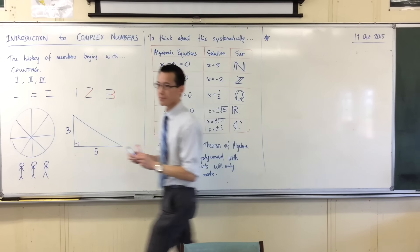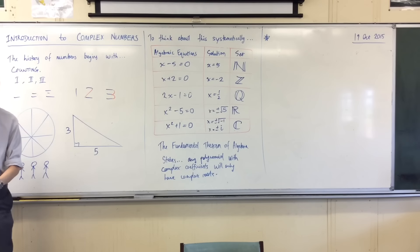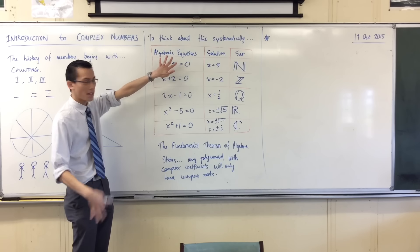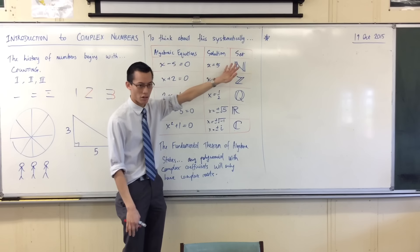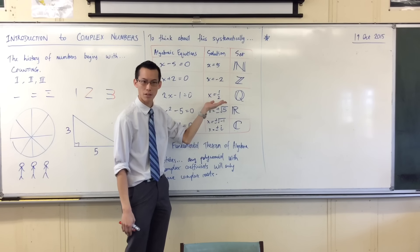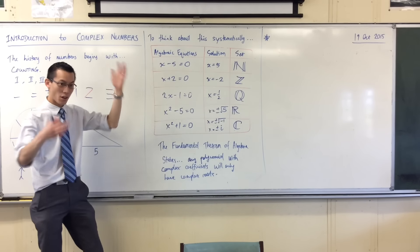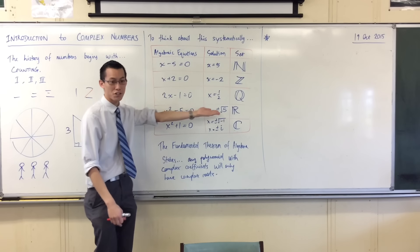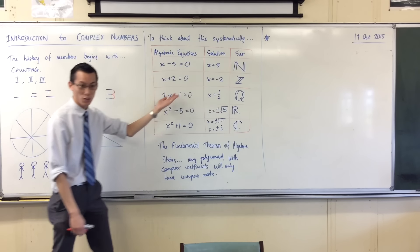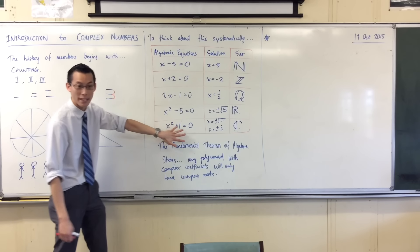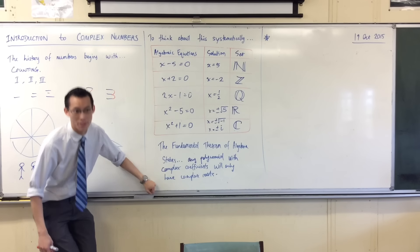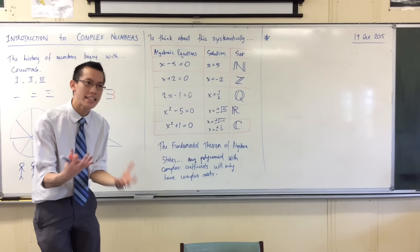Unlike every other kind of number, for instance, you can make an equation with just counting numbers, but its solutions are not counting numbers. They might be rational numbers. You can make an equation with irrational numbers and its solutions will not be rational numbers. They'll be something else. But once you get to complex numbers, you can't make anything more.